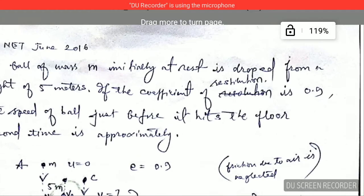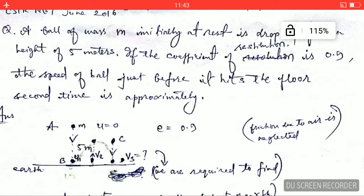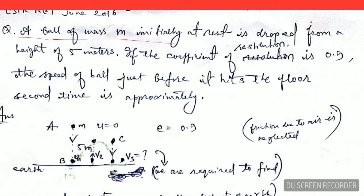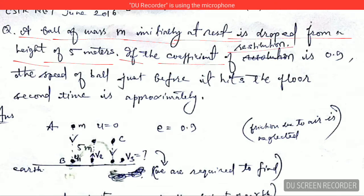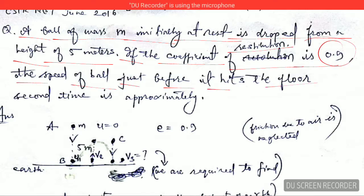So the question is: a ball of mass m, initially at rest, is dropped from a height of 5 meters. If the coefficient of restitution is 0.9, the speed of the ball just before it hits the floor the second time is approximately what?